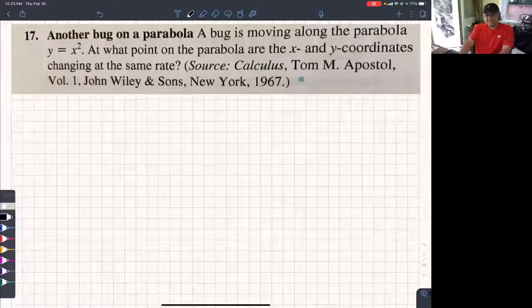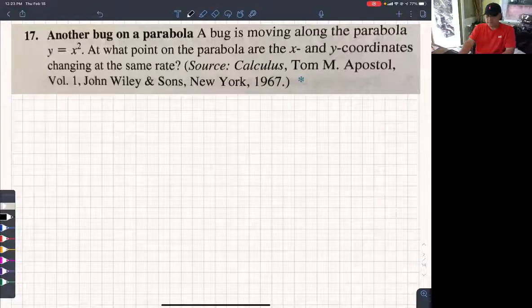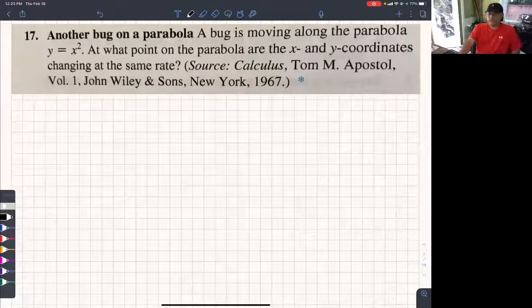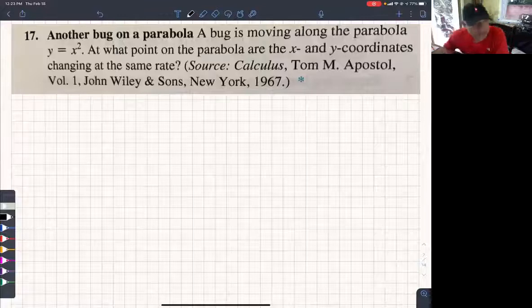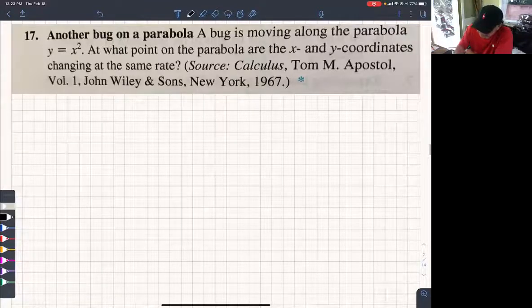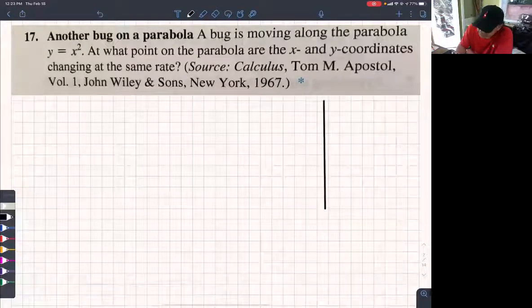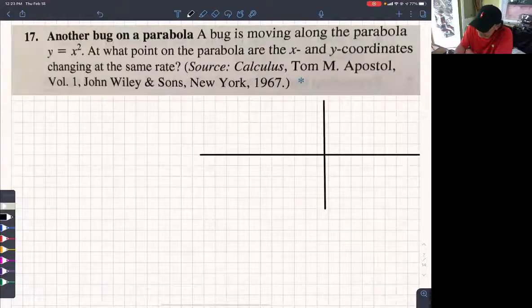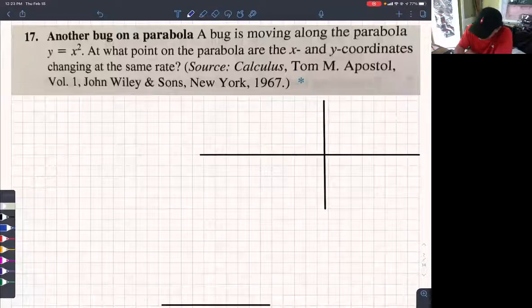All right, this is 3.11 number 17, related rates. So you have a bug on a parabola. You don't need to know what the parabola looks like, but just to give you a feel for what's going on in the problem, I am going to draw a parabola.